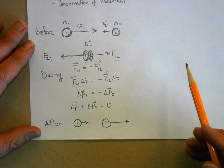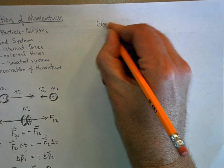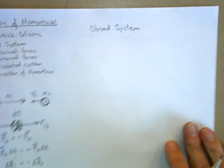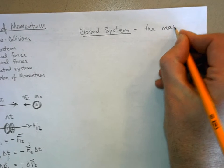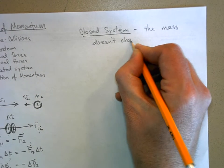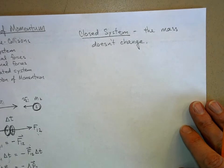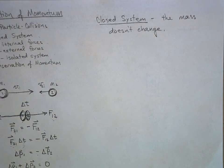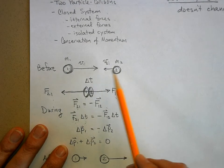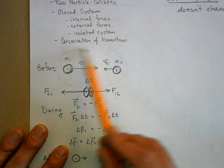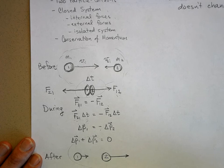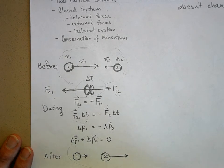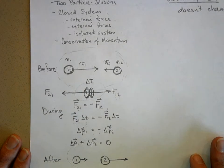Now I want to define a couple of things. First, a closed system — and this is in your book so read it. In a closed system, the mass doesn't change. I'm looking at a little part of the universe and saying: in this part, I'm not going to add or subtract any mass. In our collision with object one and object two, before, during, and after the collision, the mass doesn't change. So this is a closed system.